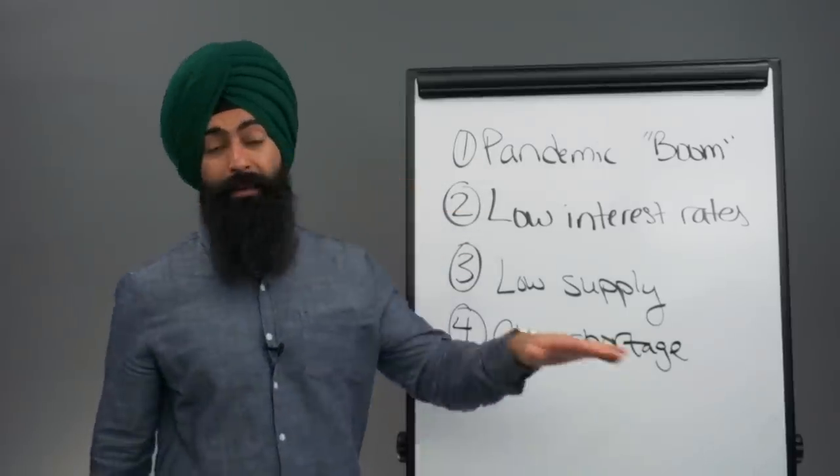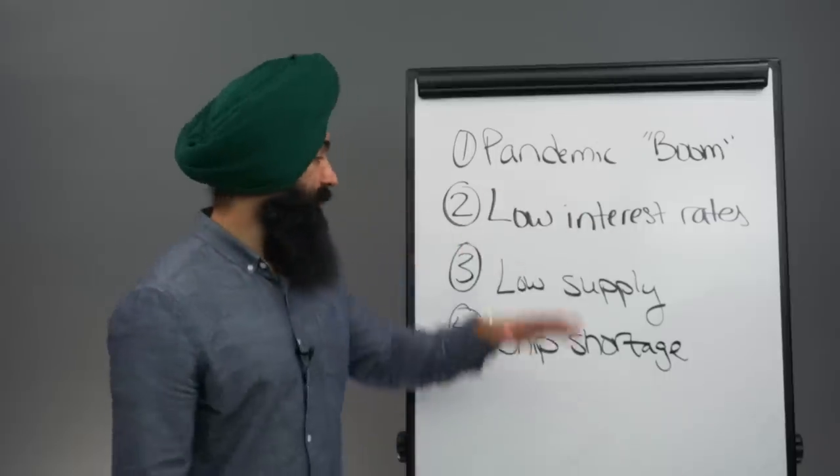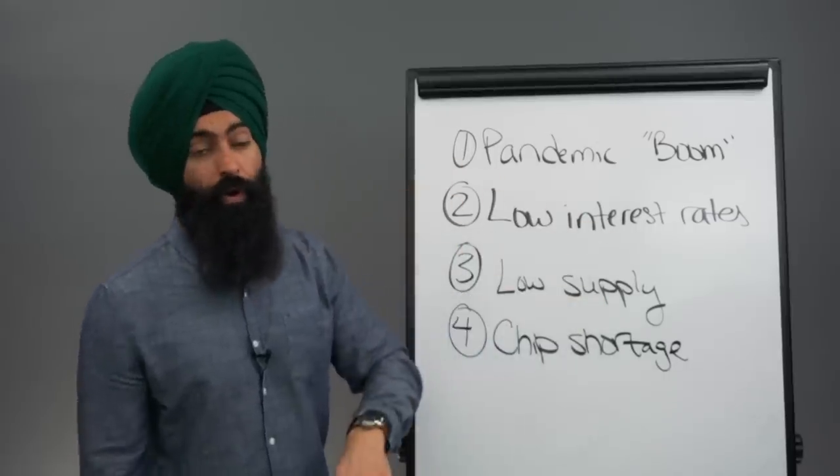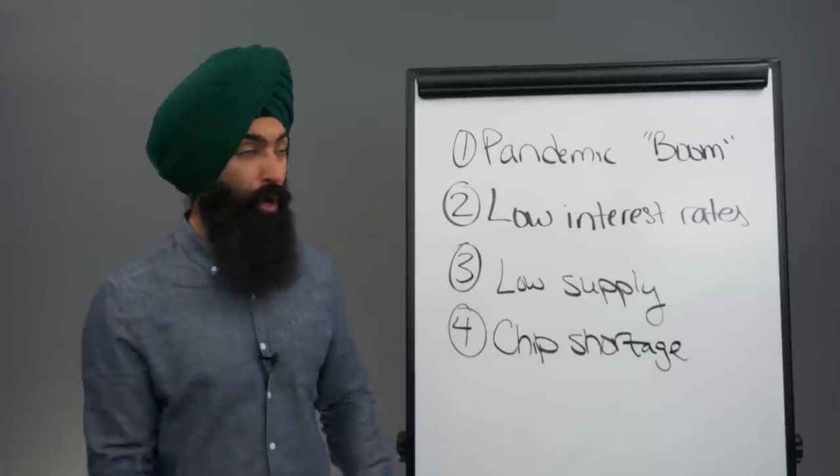Number one, we had the pandemic economic boom. Number two, we had super low interest rates. Number three, we had a low supply of cars. And number four, we had a chip shortage, meaning we couldn't produce more cars.